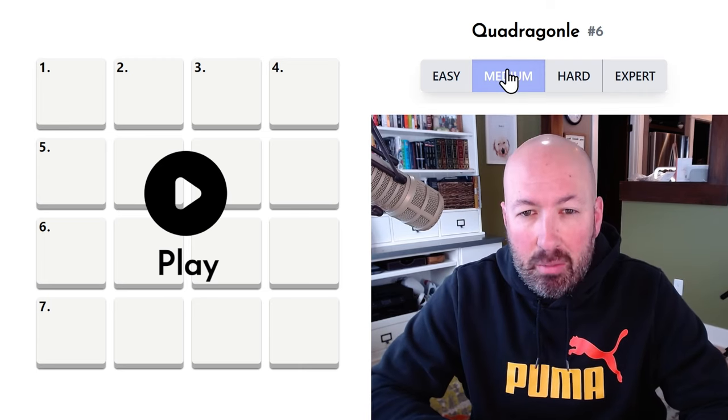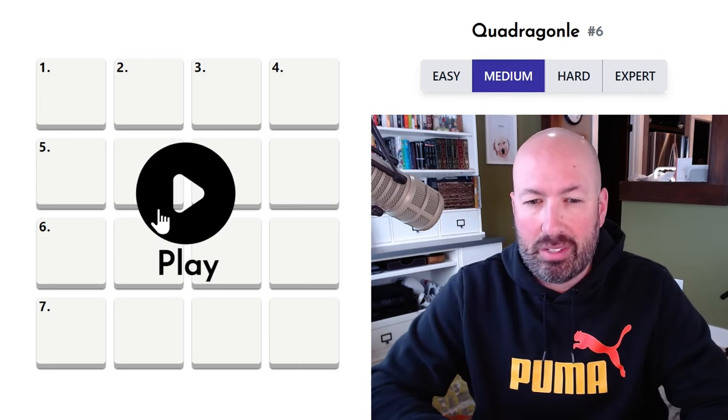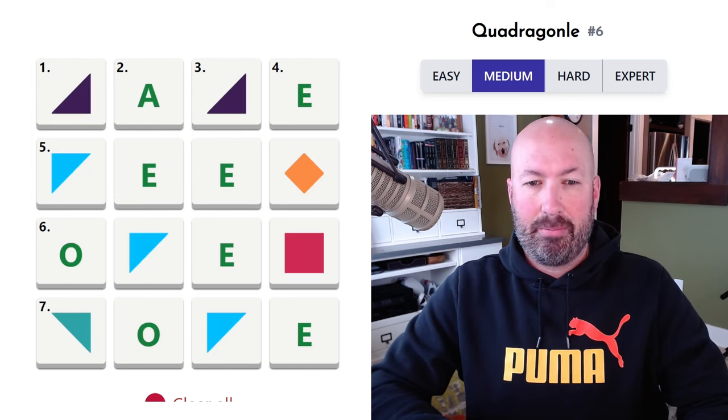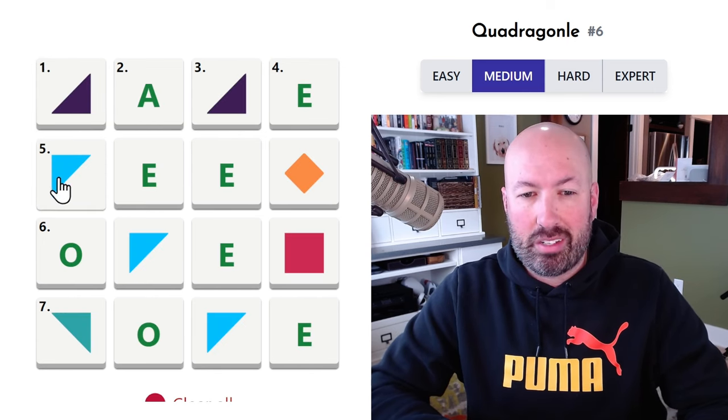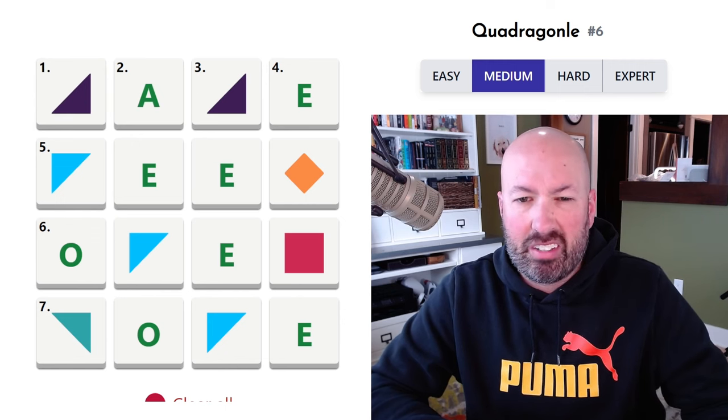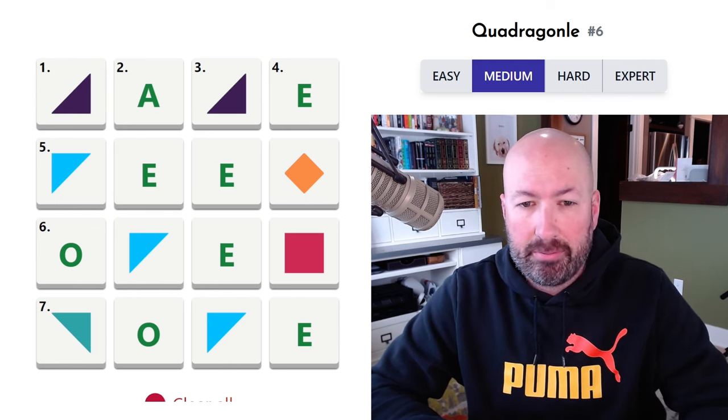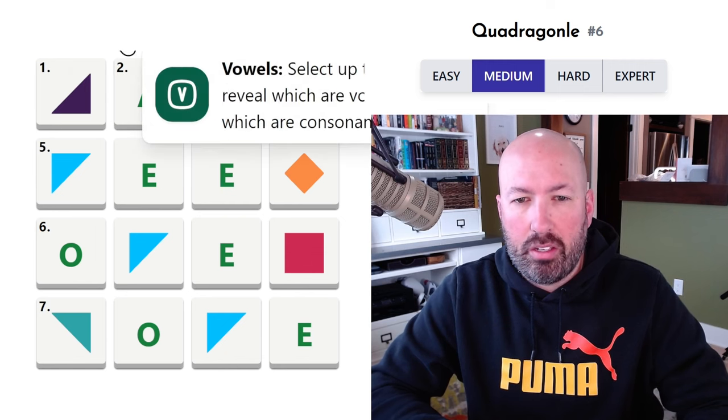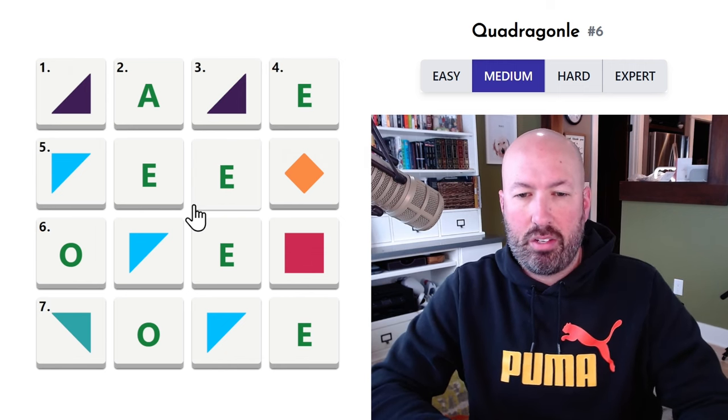I'm going to take a look at the medium one now, and maybe we'll do hard and expert. We'll see how long these take. But basically, the way this works is there's these symbols, and if it's the same symbol, it's the same letter. It's kind of like Polygonal in that way. And we do have some hints that we can use, but we're going to try not to, of course.